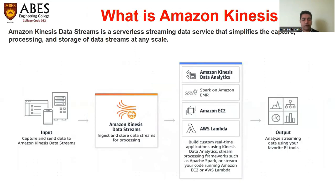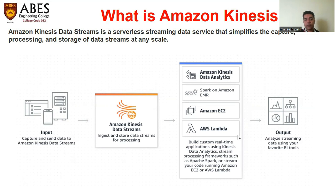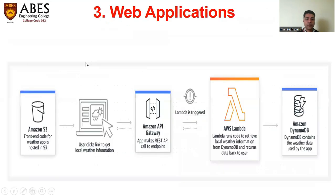Amazon Kinesis Data Streams is a serverless streaming data service that simplifies the capture, processing, and storage of data streams at any scale. We can attach it with Amazon Kinesis using EC2, Lambda, or Spark to get the output.